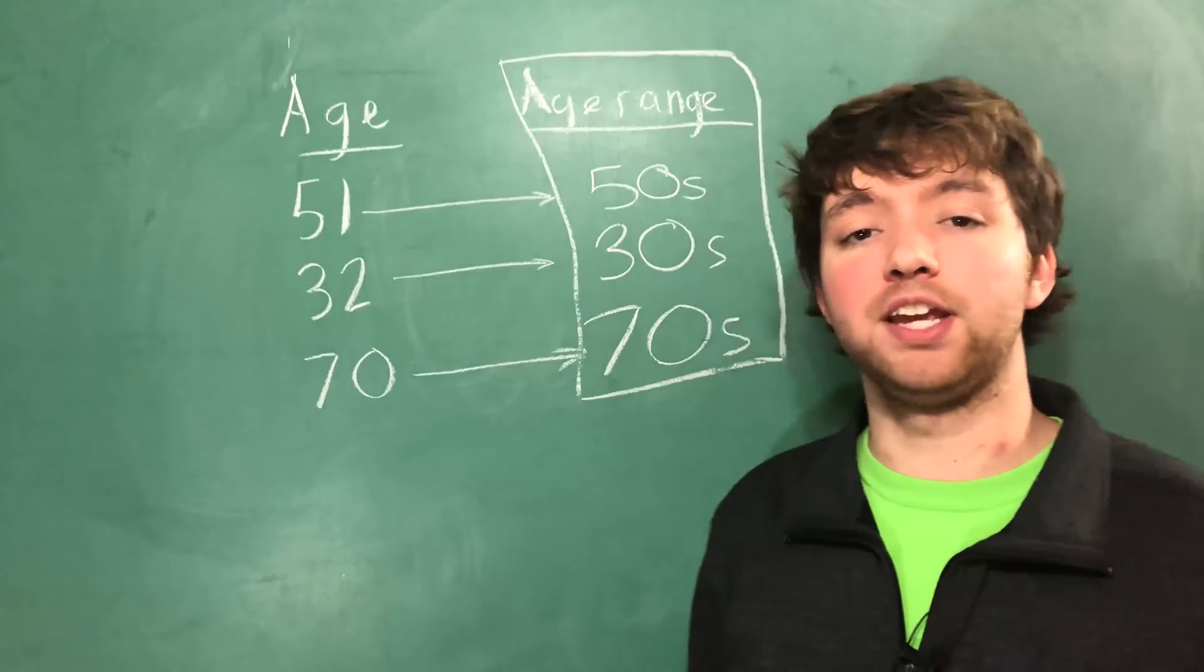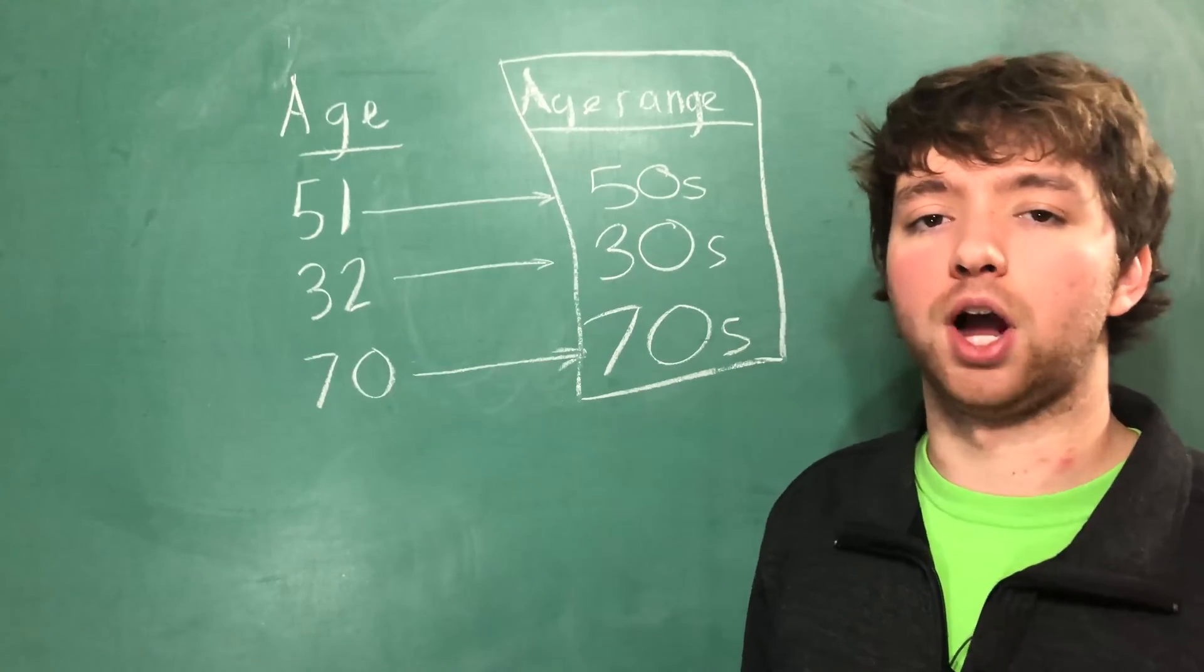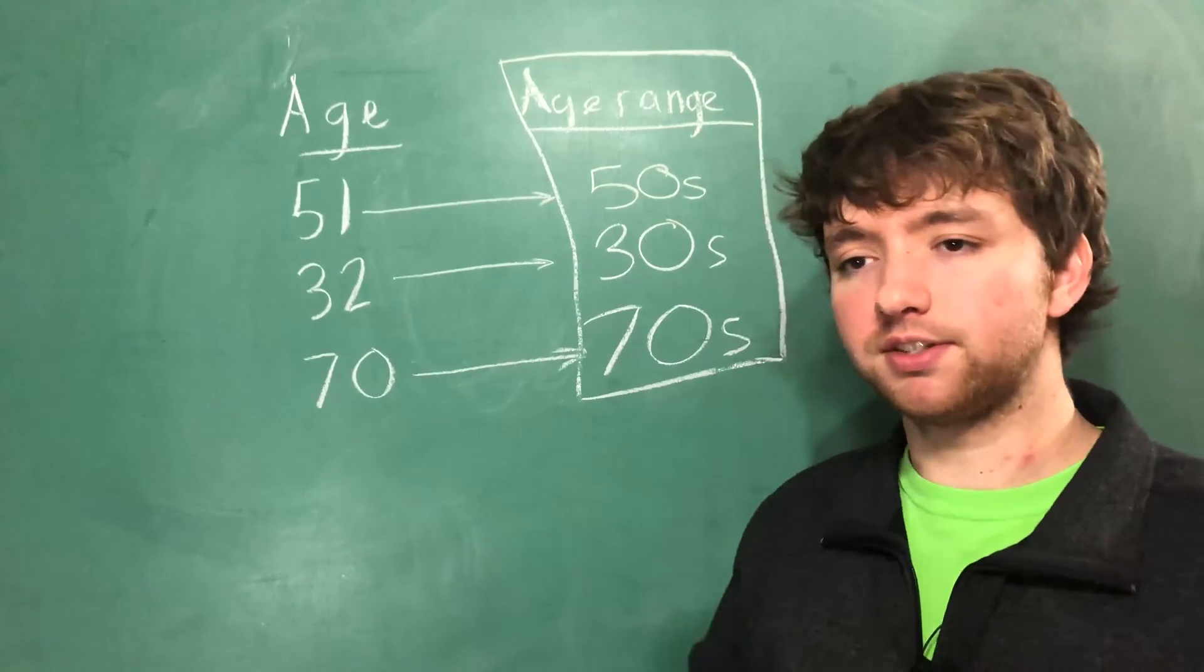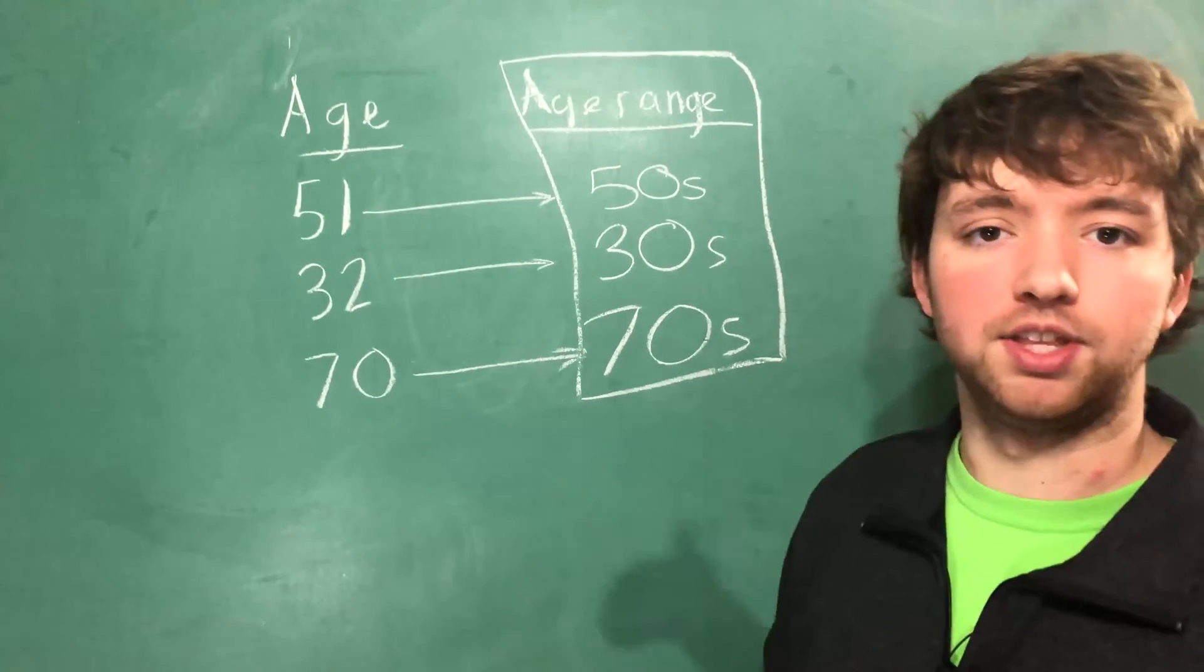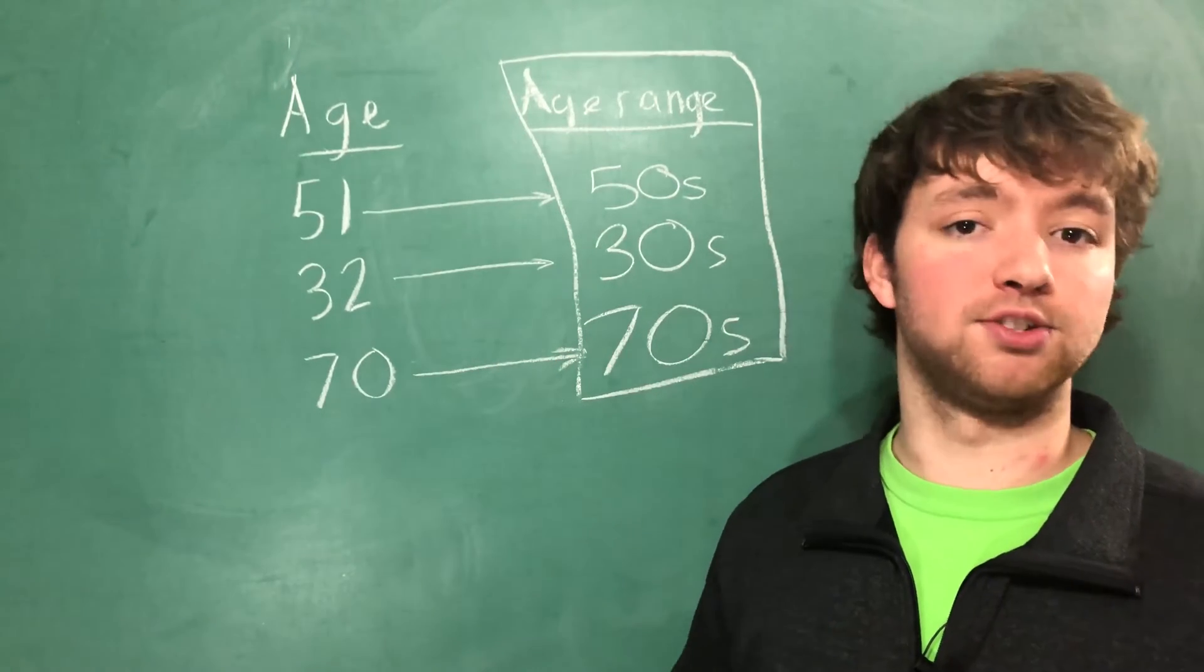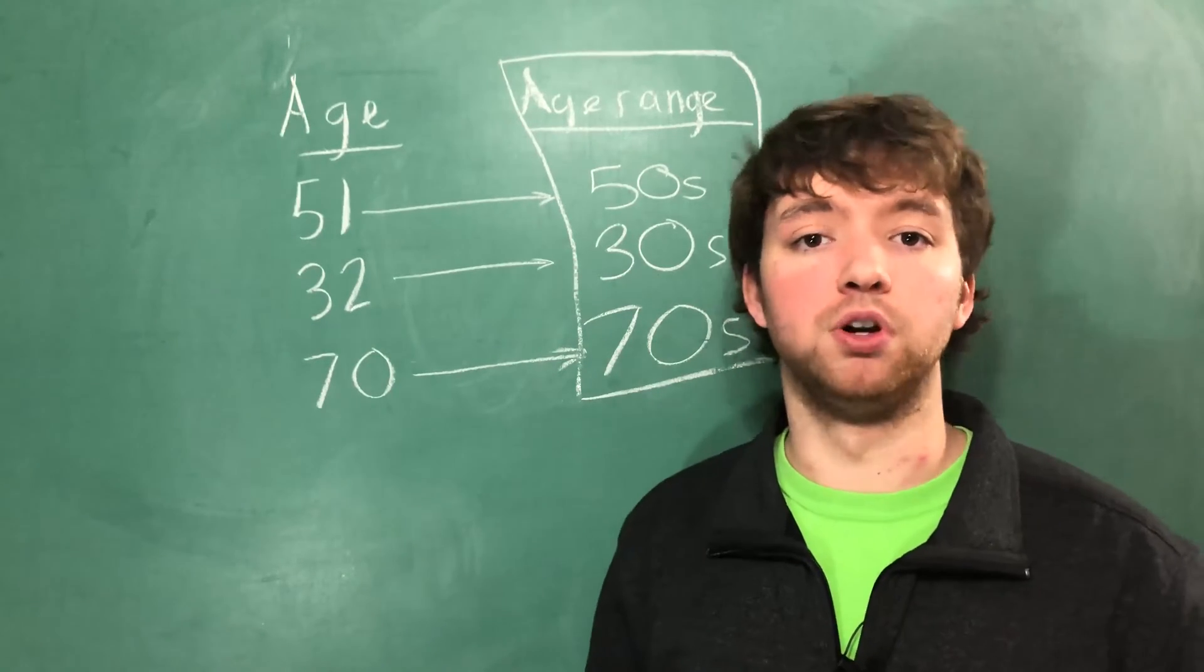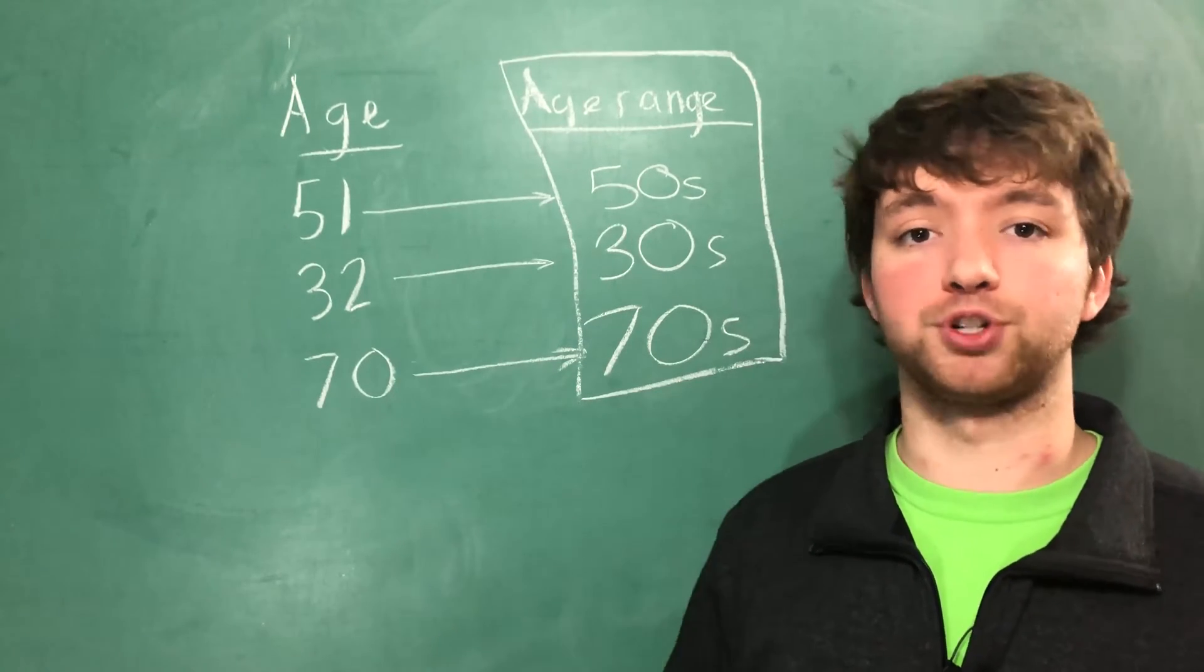Later on we're going to learn a data structure called a decision tree and this is going to show how important categorical data really is. Because this is going to branch a bunch and the higher the cardinality the more complex this decision tree is going to get. So the less cardinality the more simple things are going to be for machine learning.